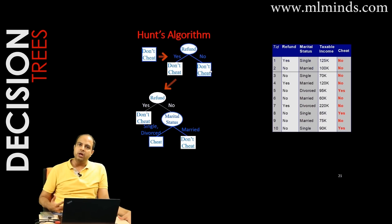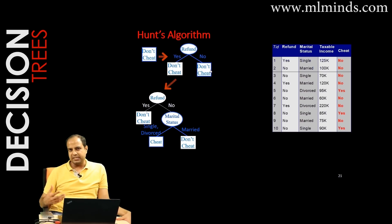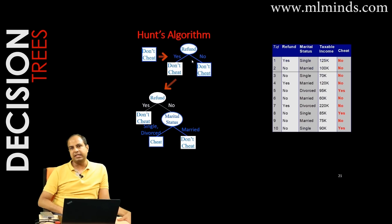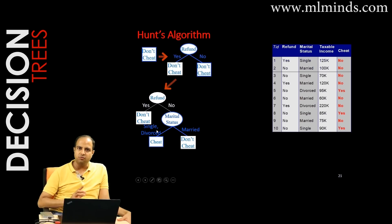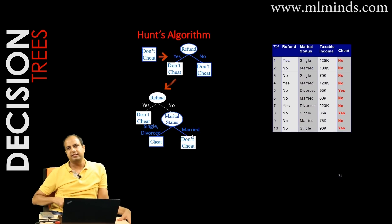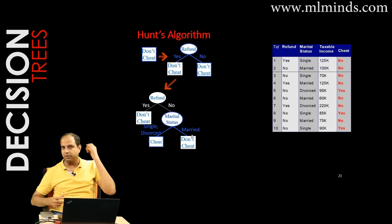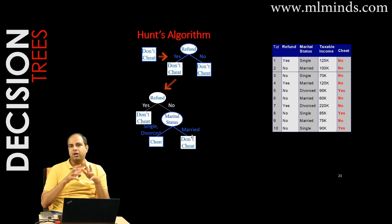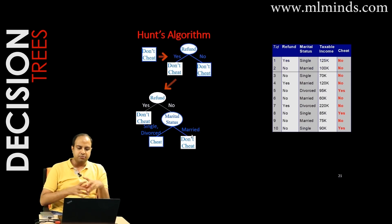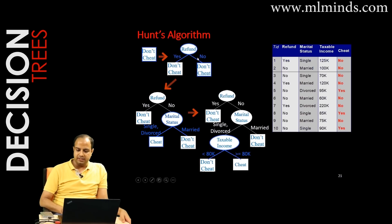A bushy tree with few instances per branch causes low accuracy and technically leads to overfitting. That's why binary decision trees are more popular. For a binary split on marital status, we group 'single' and 'divorced' on one branch and 'married' on the other. Why that grouping and not another? We'll address that question later.